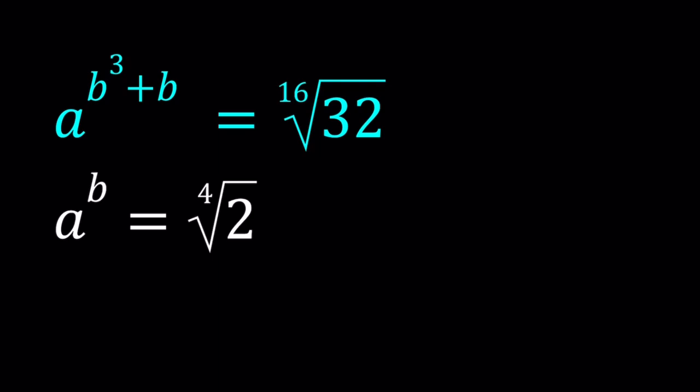So first of all, I want you to note one thing. We have b cubed plus b, and that can be written as b times b squared plus 1. So that's the idea we're going to use to solve this system.